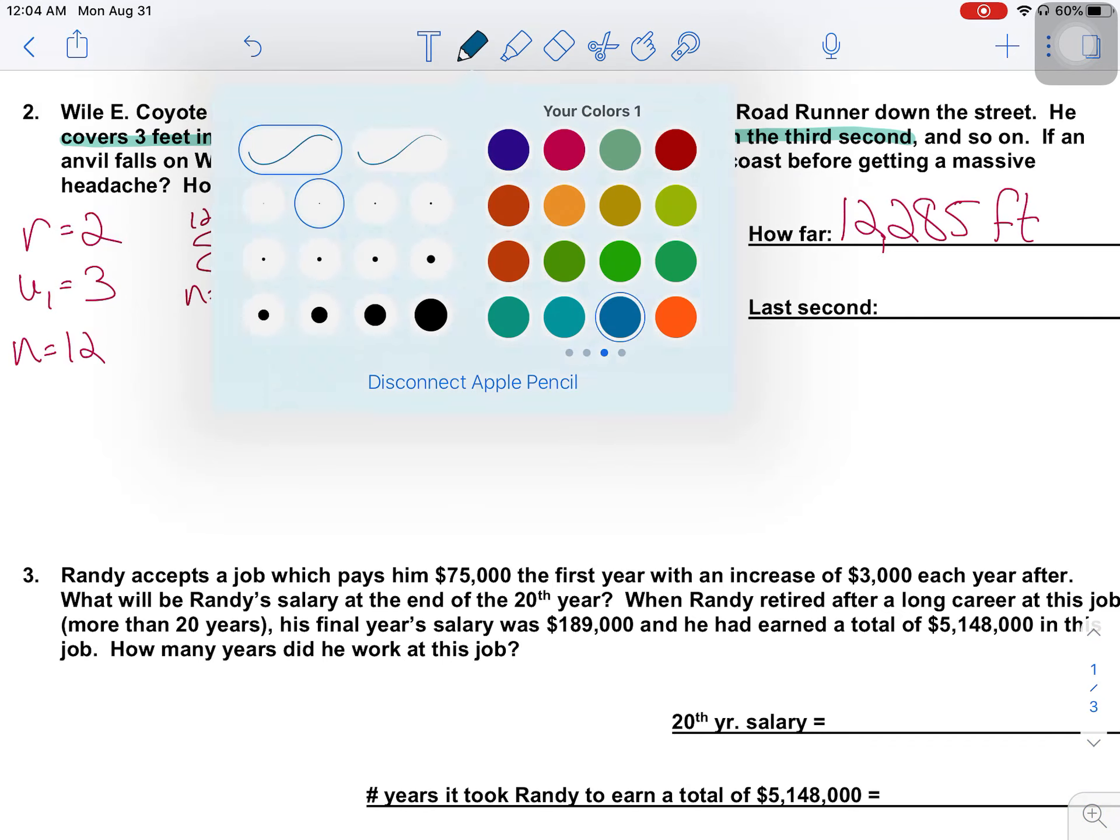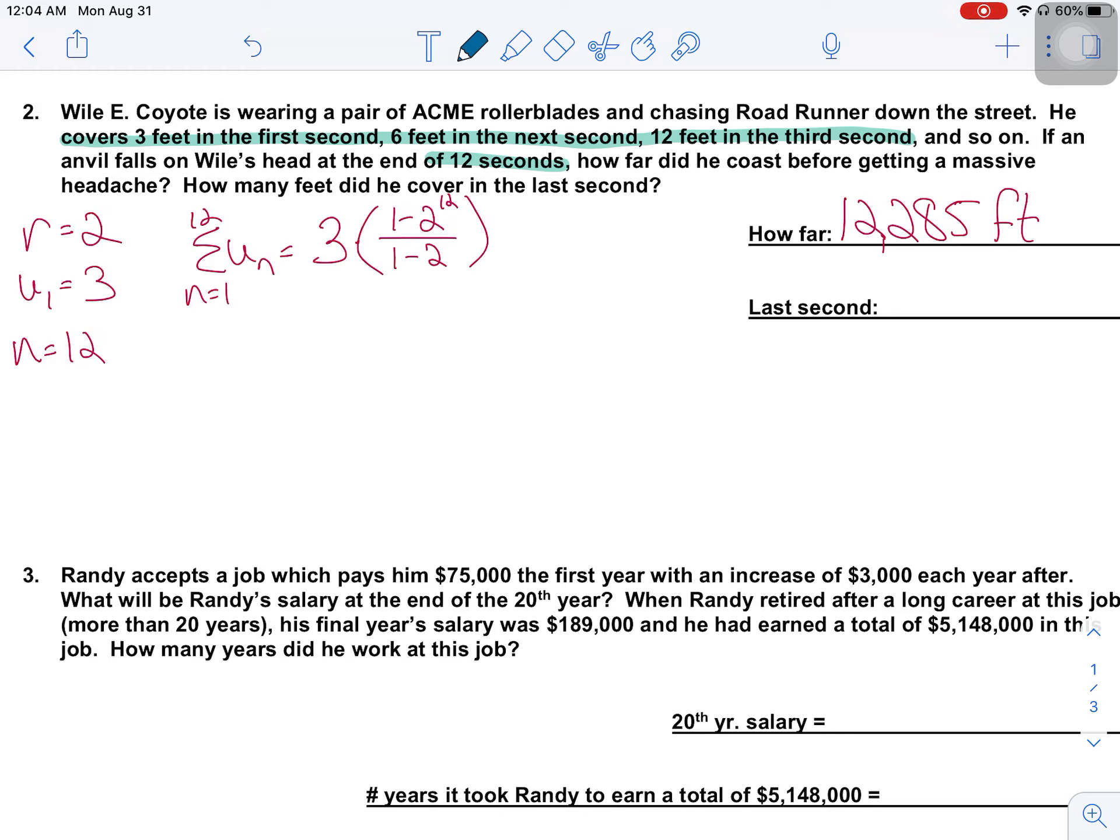There's a secondary question in this problem, which is asking, how many feet did you cover in just the last second? So if you're just wondering what happens in the last second, you would be looking for the U sub 12 term. And so we're going to use the explicit definition for a geometric sequence to find that 12th term. So that's going to take my first term times my common difference, raise it to the N minus 1 power. Again, throw it in a calculator. I'm going to keep telling you that a lot of times here. So last second, he covered 6,144 feet. And then he got whacked with an anvil. So geometric sequence, make sure you're using the right formulas in the right places.